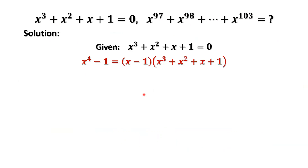You may ask, where does this formula come from? Actually, 1, x, x squared, x to the power of 3 are from a geometrical sequence. The finite geometrical sequence sum has this formula. Therefore, we can use this formula for our question.